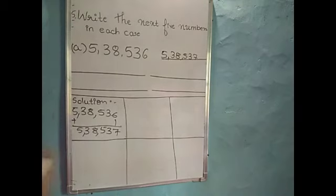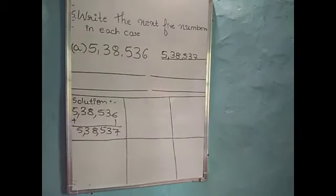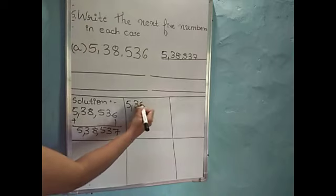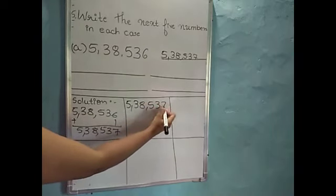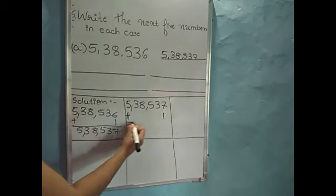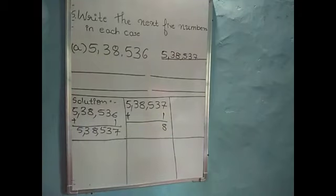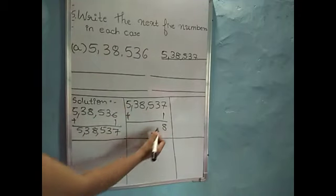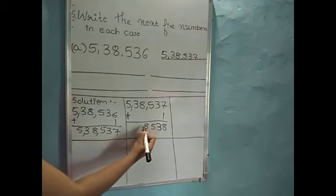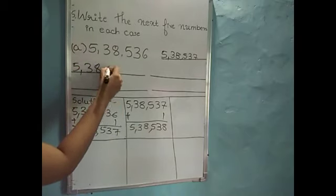We should add 1 to this number to get the next number. So I will write here 5,38,537. After that we should add 1: 7 plus 1 is 8, and write remaining numbers as it is — 3, 5, 8, 3 and 5. So the next number is 5,38,538.